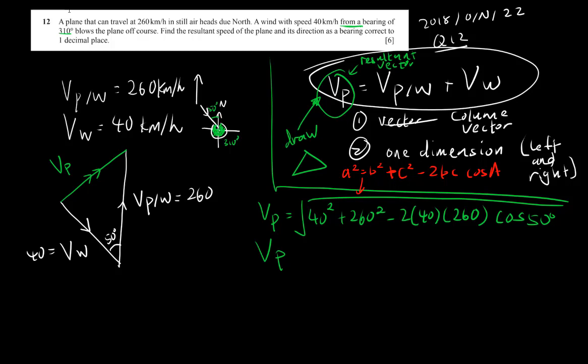If you do not know how to use the cosine rule, please check out my previous video. So over here, what I do next is basically I just type everything into the calculator. 40 squared plus 260 squared minus 2 times 40 times 260 times cos 50, I square root my answer.